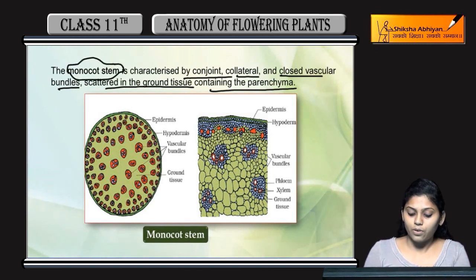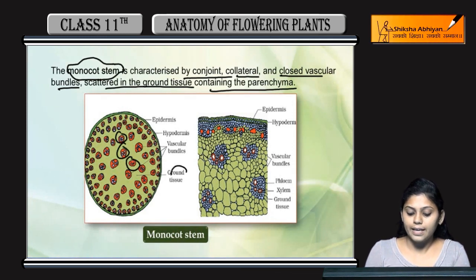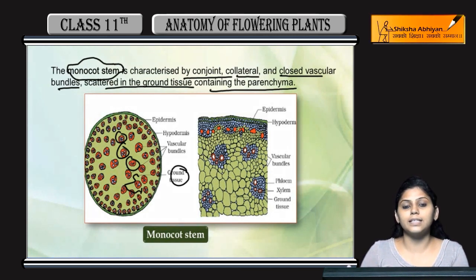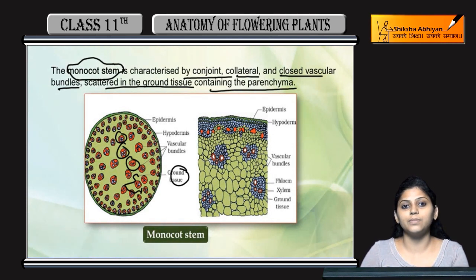You can see here in monocot stem, the vascular bundles are present and they are scattered in the ground tissue. So that would be a monocot stem. From these features, after we study them under the microscope, we can determine whether they are monocot or dicot stems.